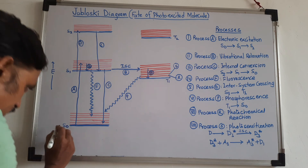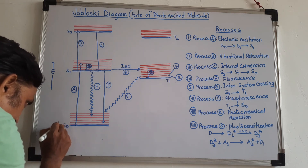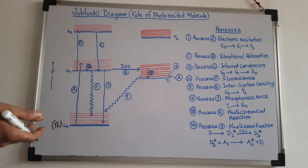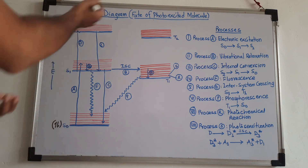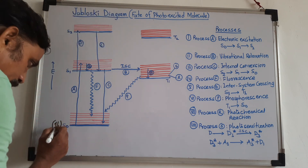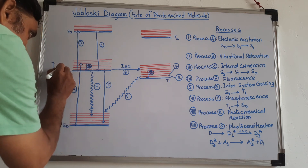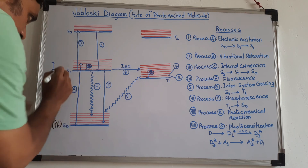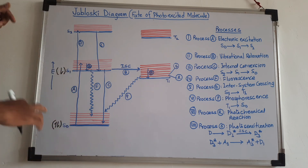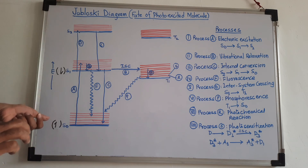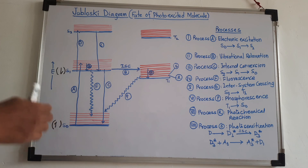Our molecule is here in the ground singlet state. You can see the spin of the electrons. When it absorbs energy from the UV or visible region, it undergoes electronic excitation — one electron is excited to a higher level. The spin of this electron is not changed, so the spin of the excited electron and its partner is similar to the ground electronic state.